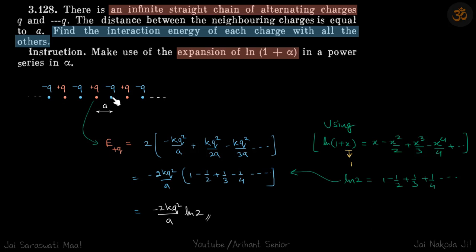With this charge it is minus KQ squared by A. With this charge it is plus KQ squared by 2A. This distance becomes 2A, then distance becomes 3A, so minus KQ squared by 3A and so on.